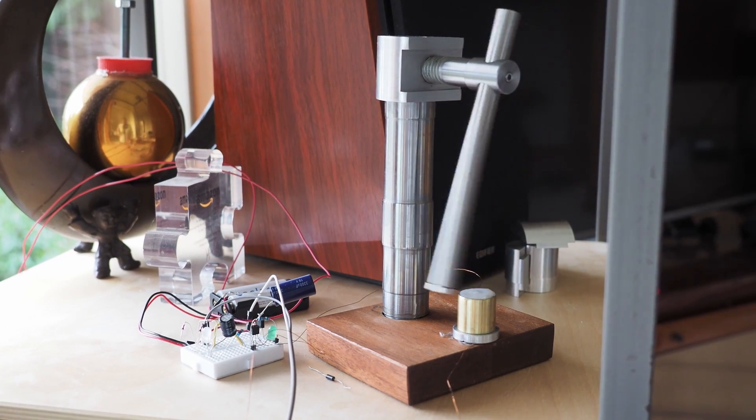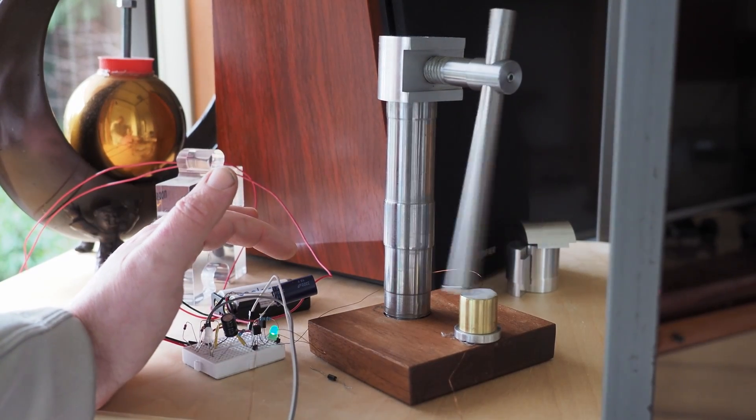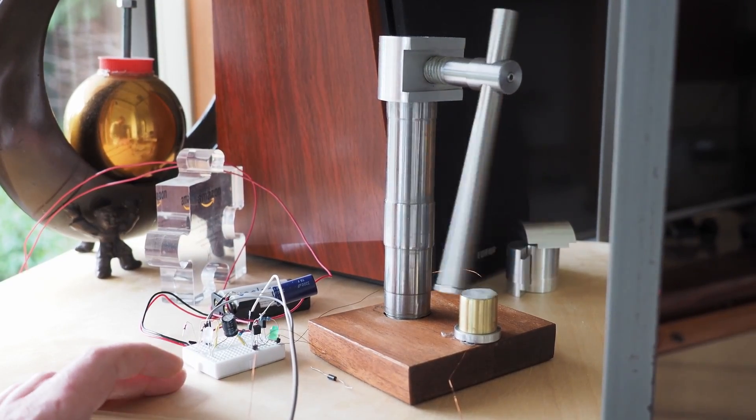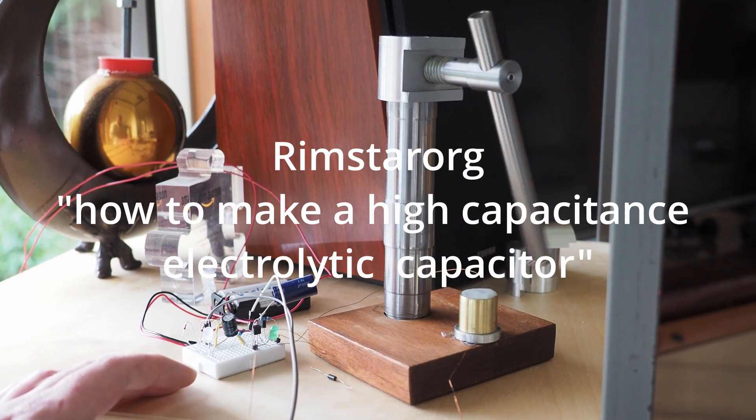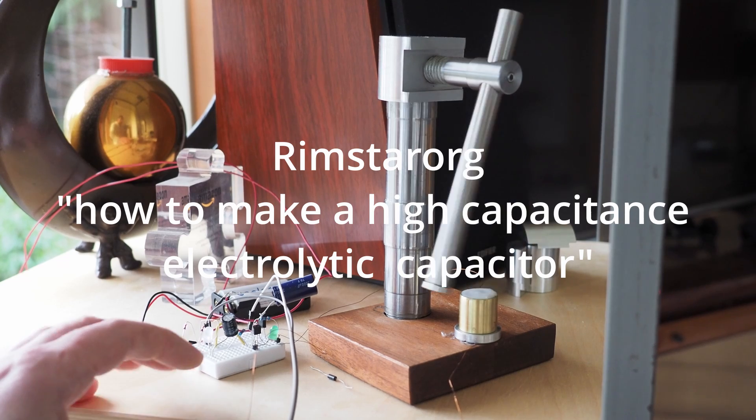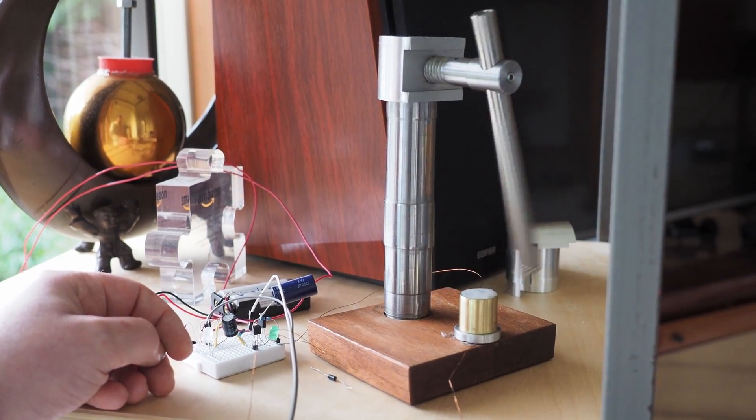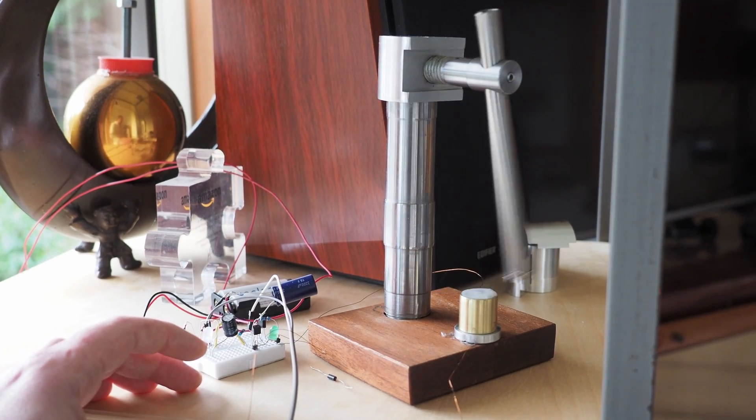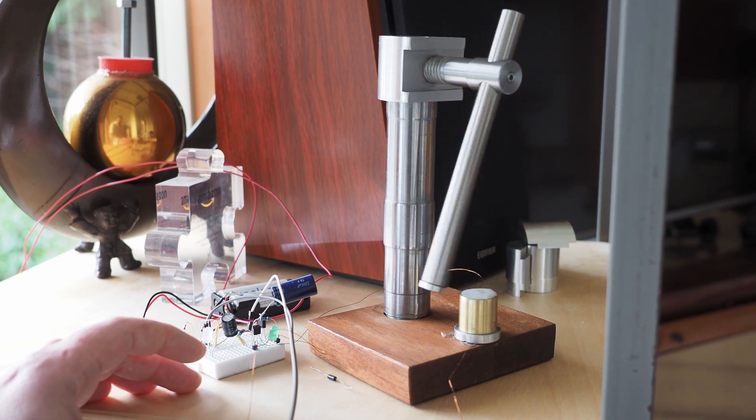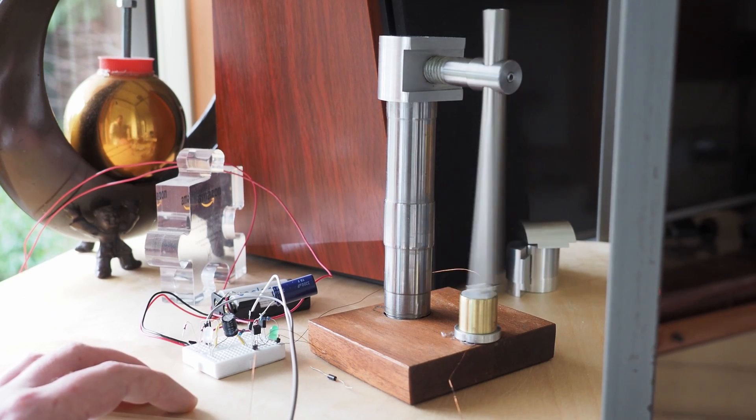But it got me on a sidetrack which is I only had one of these big capacitors and I watched a video by I think it's recstar org where he made an electrolytic capacitor with aluminum foil and sodium bicarbonate, and I made one of those. I was able to get it to I think the final result was something like three millifarads, which is actually pretty good for a homemade capacitor.